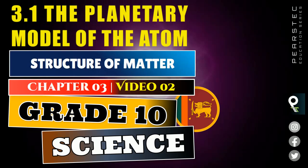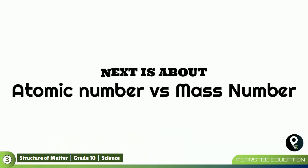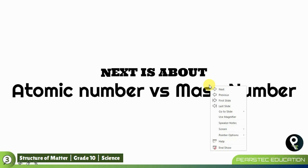We talked about one scientist who introduced the theory of the atom, and we are going to learn about another scientist who validated that theory. After that, we will come to know certain things about an atom and find out the difference between two important terms that confuse students: atomic number versus mass number. We will learn that at the end of the session.